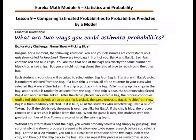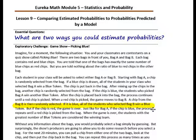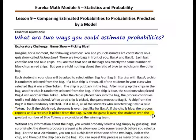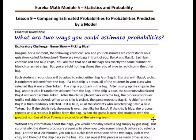When a red chip is picked, the game moves to bag B. A chip from bag B is then randomly selected. If it is blue, all of the students who selected bag B win a blue token. But if the chip is red, the game is over — round one done. Just like for bag A, if the chip is blue, the process repeats until a red chip is picked from bag B. When the game is over, the students with the greatest number of blue tokens are considered the winning team.